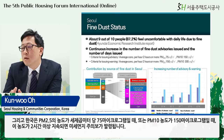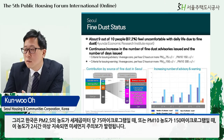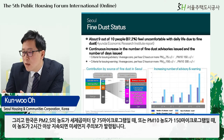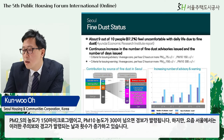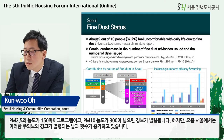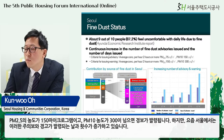In Korea, a fine dust advisory is issued when the concentration of PM2.5 is 75 micrograms per cubic meter or PM10 is 150 micrograms per cubic meter for more than two hours. An alarm is issued when PM2.5 reaches 150 micrograms per cubic meter and PM10 exceeds 300. These days, the number of advisories and warnings is on an increasing trend in Seoul.